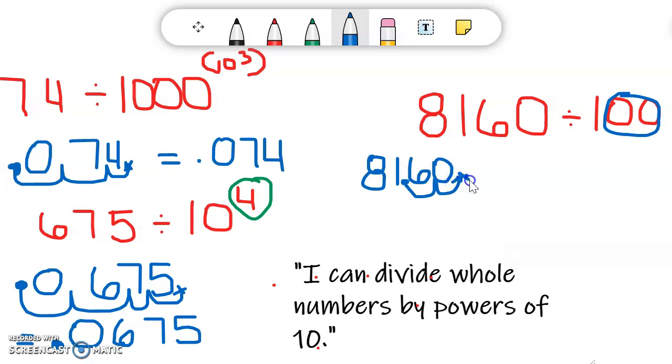So I'm going to put an X over the old spot, and now I'm going to rewrite my product, which is 81.60. That decimal point there, and a zero. That's my final answer or final product.